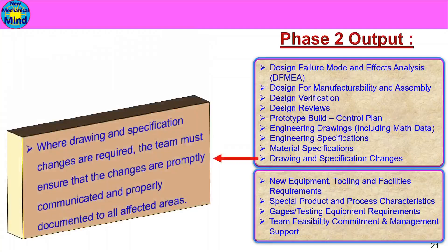Drawing and Specification Changes: Where drawing and specification changes are required, the team must ensure that the changes are promptly communicated and properly documented to all affected areas. Sometimes during design verification and review, you may need to change the drawing or design. There is a process of engineering change note. You can record the engineering changes in the process.